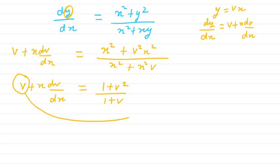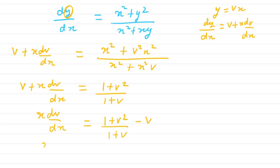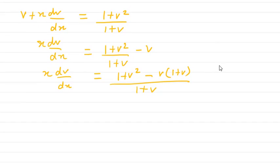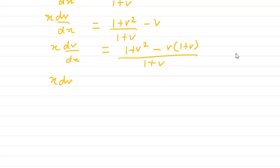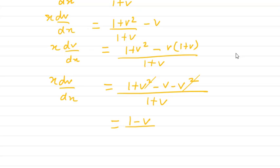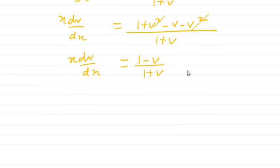It's very important to move v to the other side and simplify — this is a common mistake students make in exams, not simplifying this step. After bringing v across, x·dv/dx equals (1 + v²) minus v(1 + v) all divided by 1 + v. Expanding: 1 + v² − v − v², and the v² terms cancel, leaving x·dv/dx = (1 − v)/(1 + v).